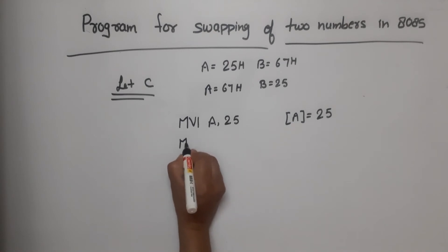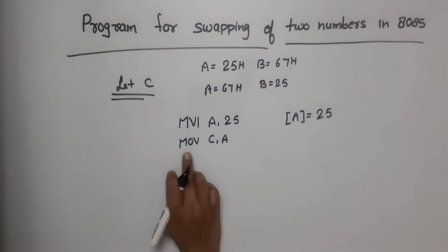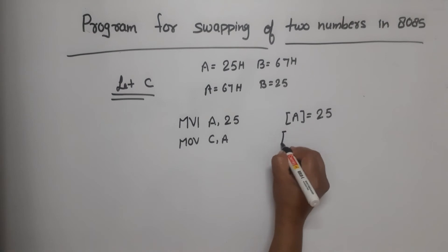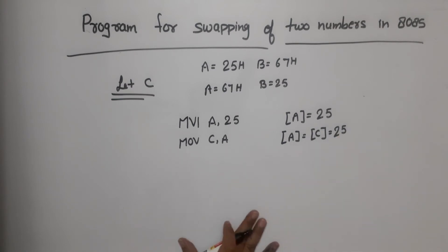Now what will we do? MOV C,A. Just like we have moved C,A. This is source, this is destination. That means that the content of accumulator will copy in register C. That means that after execution of this line, accumulator as well as register C, what will be both values? 25.